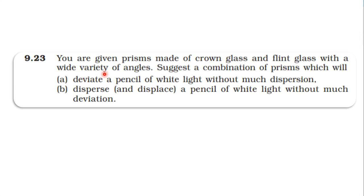From the NCERT textbook, topic ray optics and optical instruments, a problem is given: prisms made of crown glass and flint glass with a wide variety of angles. Suggest a combination of prisms which will deviate a pencil of white light without much dispersion, and also disperse a pencil of white light without much deviation.